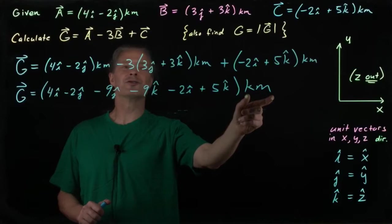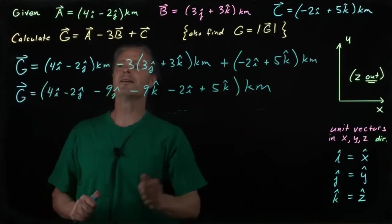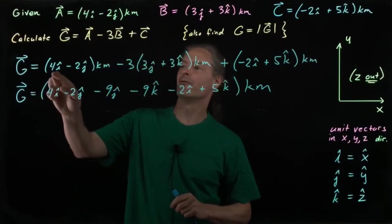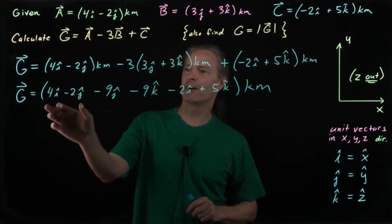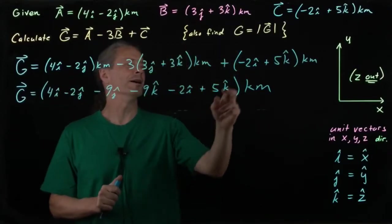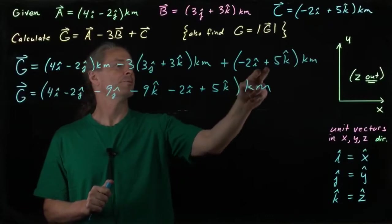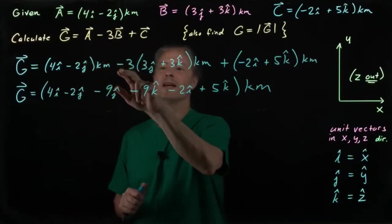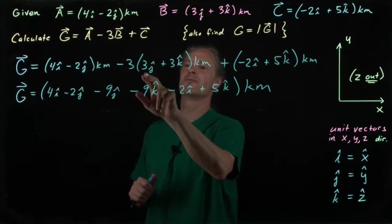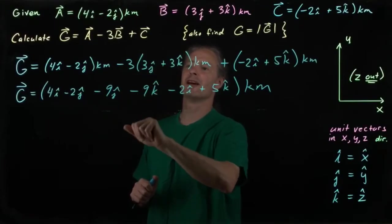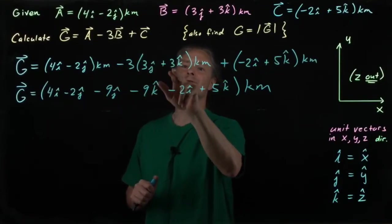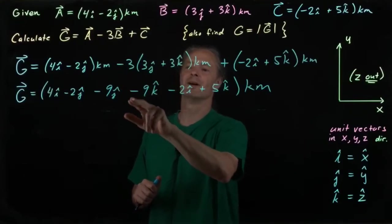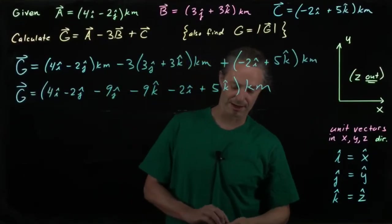So let's look at that. I factored out the kilometers from each of the terms and put it outside, and here I've got my 4i-hat minus 2j-hat right here. I've got my minus 2i-hat plus 5k-hat right here, and then this, I've got negative 3 times 3 gives me negative 9j-hat, and negative 3 times 3k-hat gives me minus 9k-hat. So I've got everything right here.